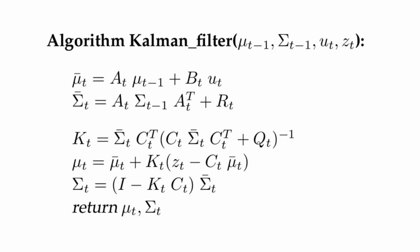The first two lines calculate mu-hat(t) and sigma-hat(t) — that represents the prediction step. We take the motion command u(t), the previous state mu(t-1), and predict the new mean. The predicted covariance matrix sigma-hat(t) is computed based on the previous covariance sigma(t-1) plus the uncertainty added through the motion noise R(t). Hence, uncertainty always increases in the prediction step because motion adds uncertainty — and now we see it mathematically.